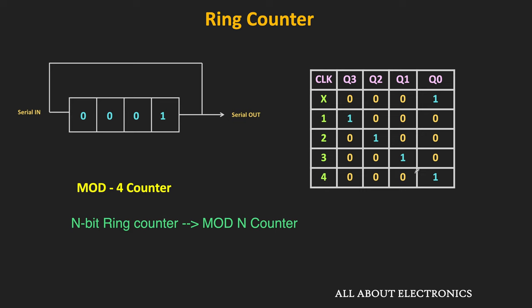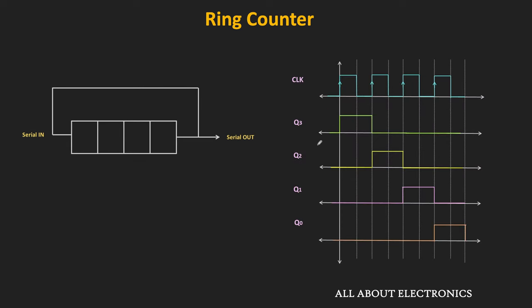This is the timing diagram of the 4-bit ring counter. Each output becomes 1 only once every 4 clock cycles, meaning the frequency of each output is 1/4 times the clock frequency. So the ring counter can also be used as a frequency divider. Moreover, the outputs Q3, Q2, Q1, and Q0 are all phase-shifted with respect to each other. So if we want to generate different phase-shifted digital signals, we can use the ring counter to do that.